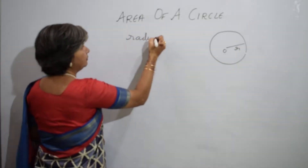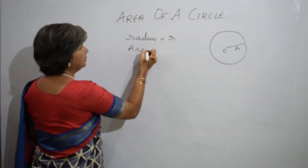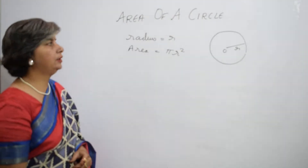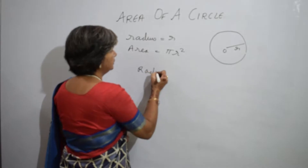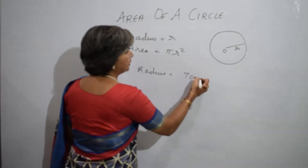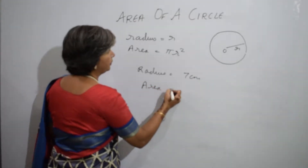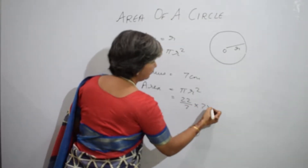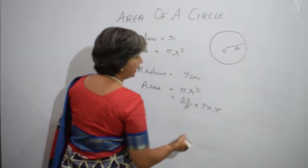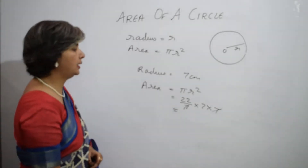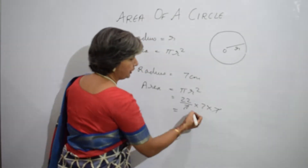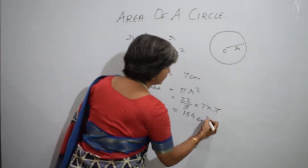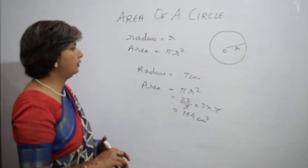...when radius is r, then area is equal to π r squared. Now suppose I have to find the area of a circle of radius 7 centimeters. Area will be equal to π r squared, that is 22/7 × 7 × 7. The 7 will cancel out and the answer will be 154 centimeter square.